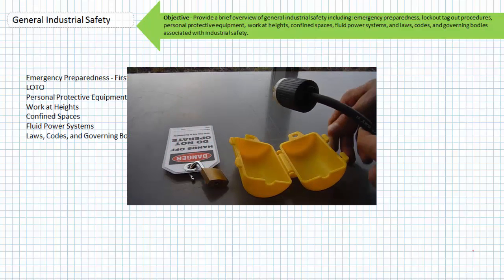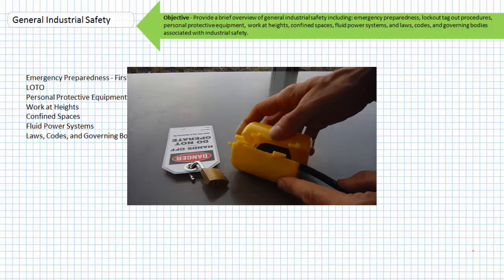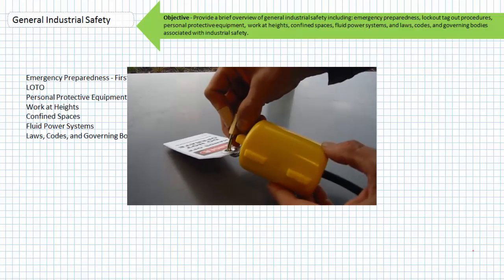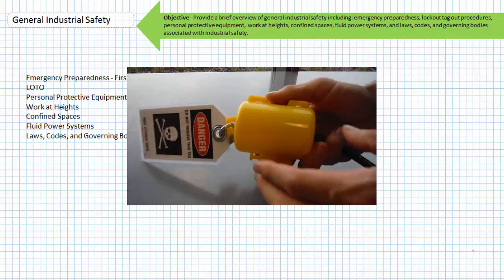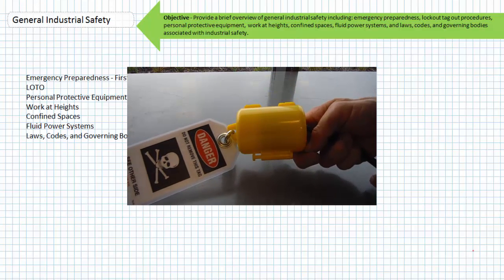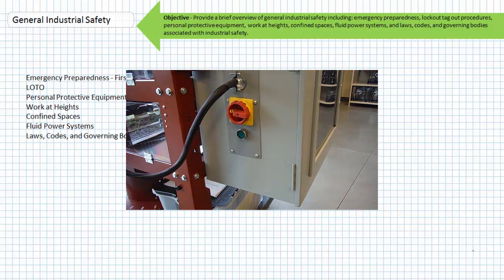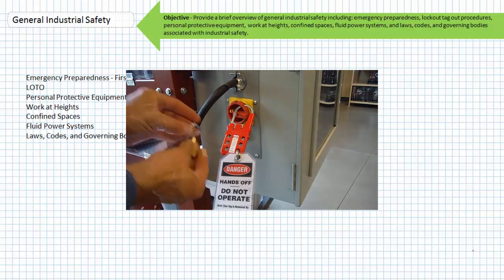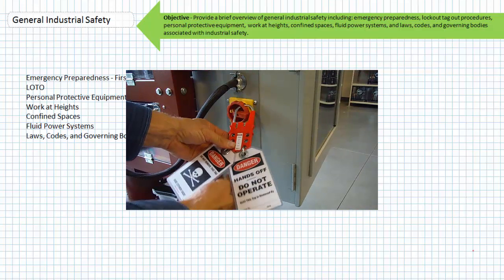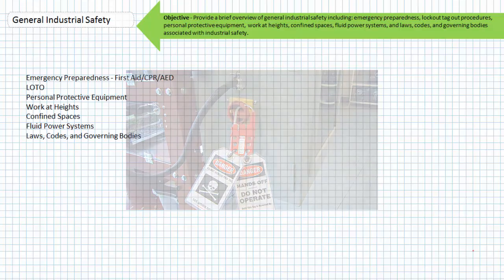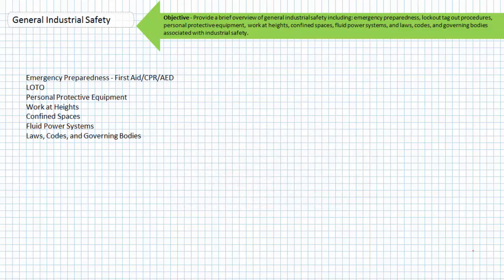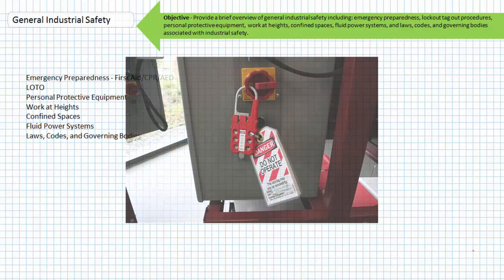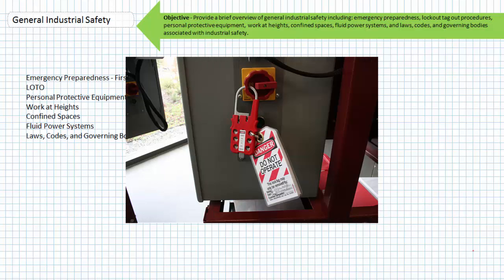Here's a lockout device being used on a plug and another lockout device being used on a switch. All individuals working on that system have their own individual lock. In order to unlock it, all individuals must be present and accounted for. This prevents the undesirable circumstance of leaving a co-worker inside a machine before it's returned to service.